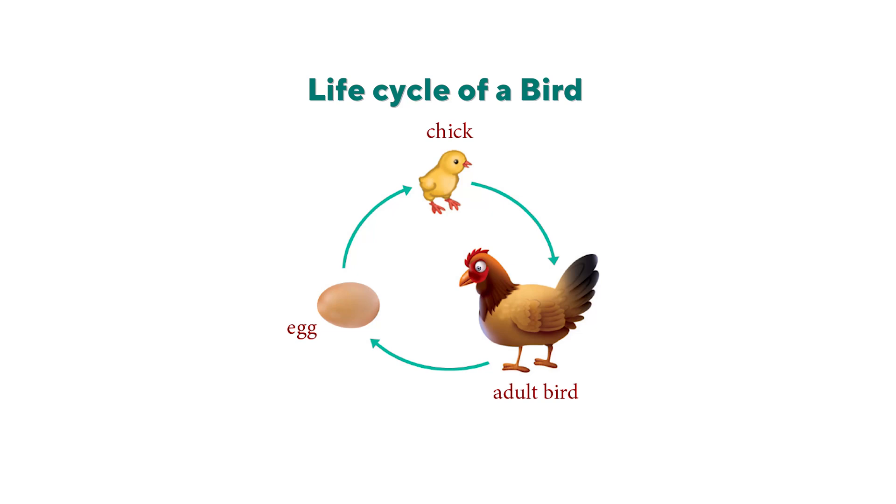Let's move on to how birds produce their young ones. They also lay eggs. Inside the eggs there is a jelly-like substance and also a yolk. The jelly-like substance is where the babies develop, and the yolk provides the nourishment or food needed for the babies. At the right time, the babies hatch out of the eggs and grow into adults. This is how the life cycle of a bird looks.